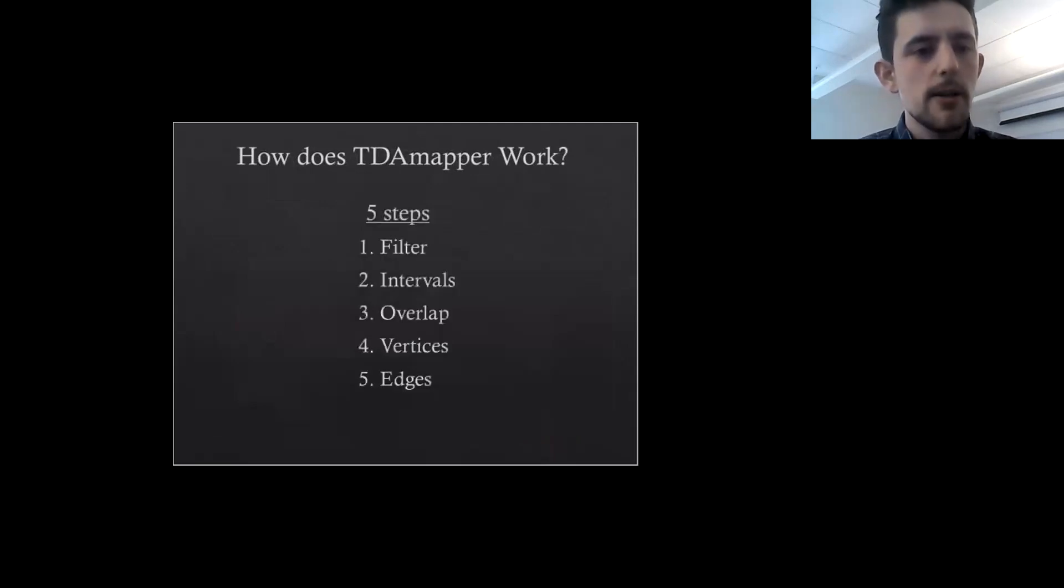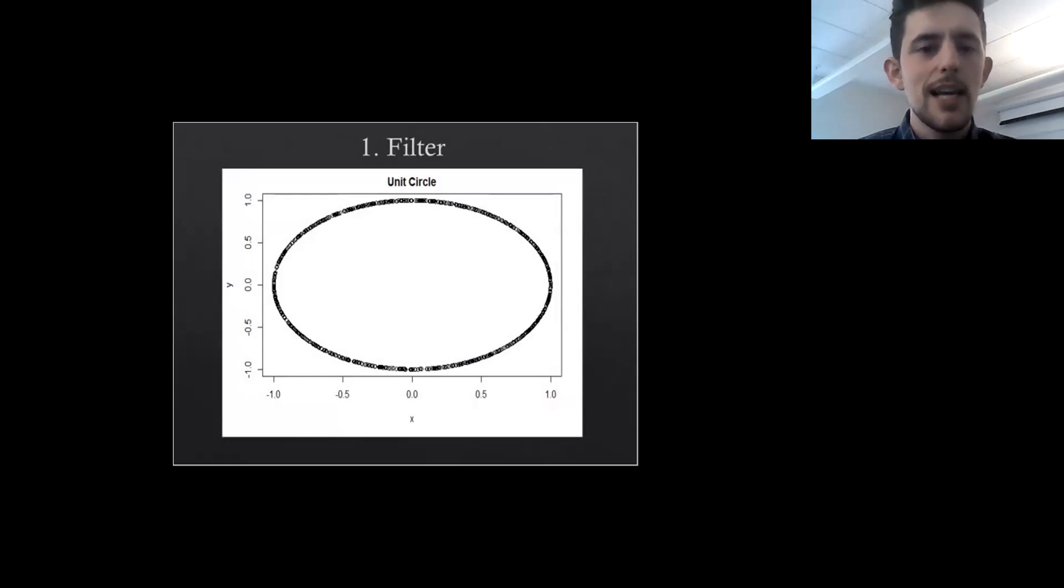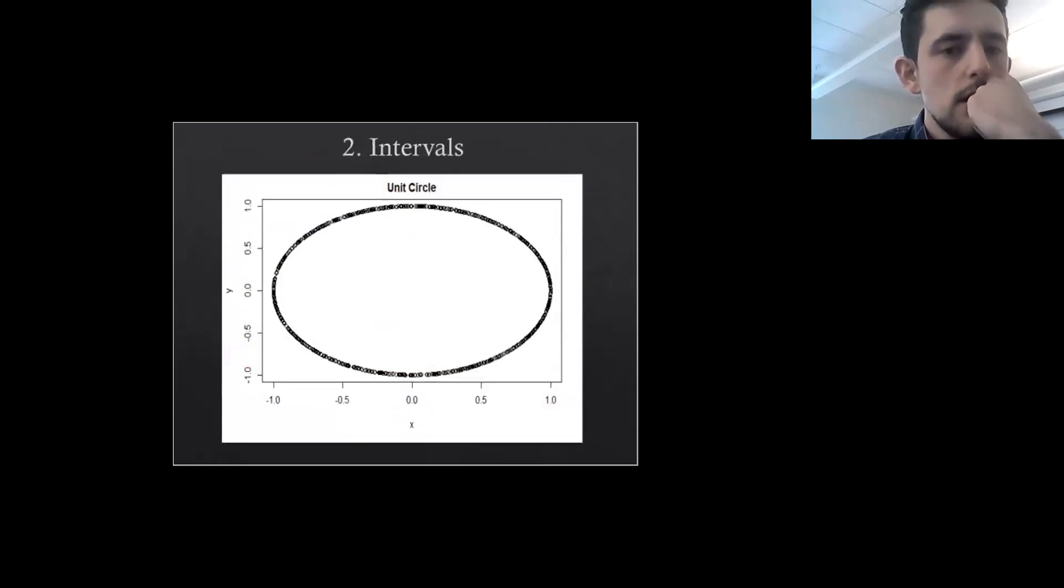We're going to go through how TDA mapper works step by step. I've created some keywords: filter, intervals, overlap, vertices, and finally edges. Let's consider a plot of points. Say we want to use TDA mapper to identify the general shape of this data set. The first thing we need to do is choose a filter, or in other words, how we're going to take slices of our graph. In this case, we're going to use the x-axis. This means we're going to take vertical slices of the graph from one side to another. The next step is intervals. Now we want to specify the number of intervals or the number of slices we're going to take along our filter. Let's say we'll have 10 filters here. This means we're going to take 10 slices along the x-axis because that was our filter.